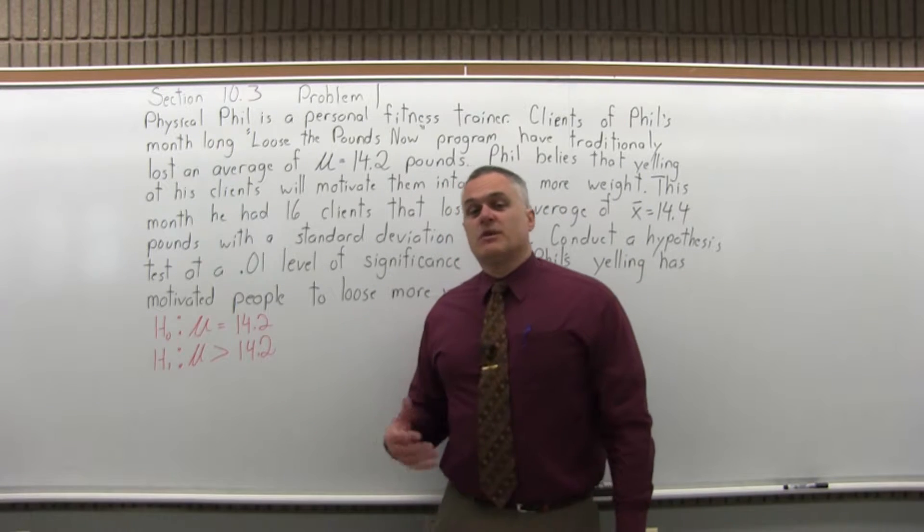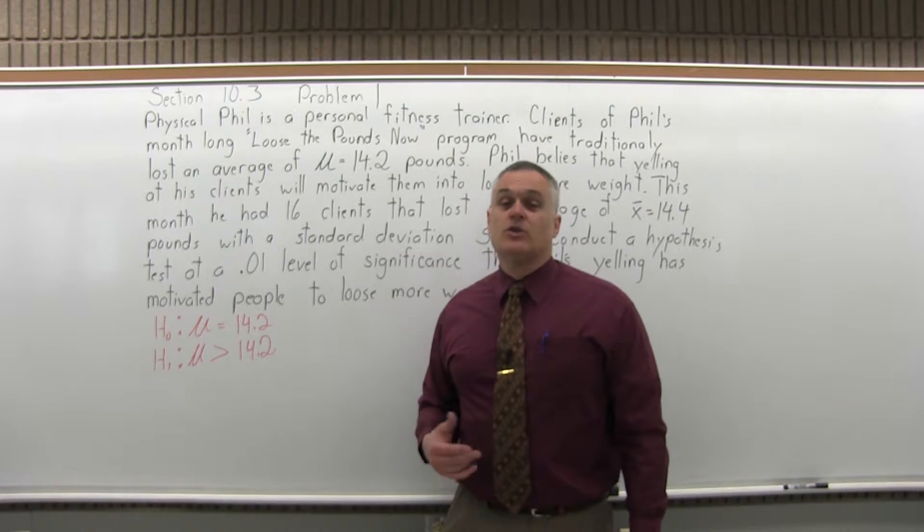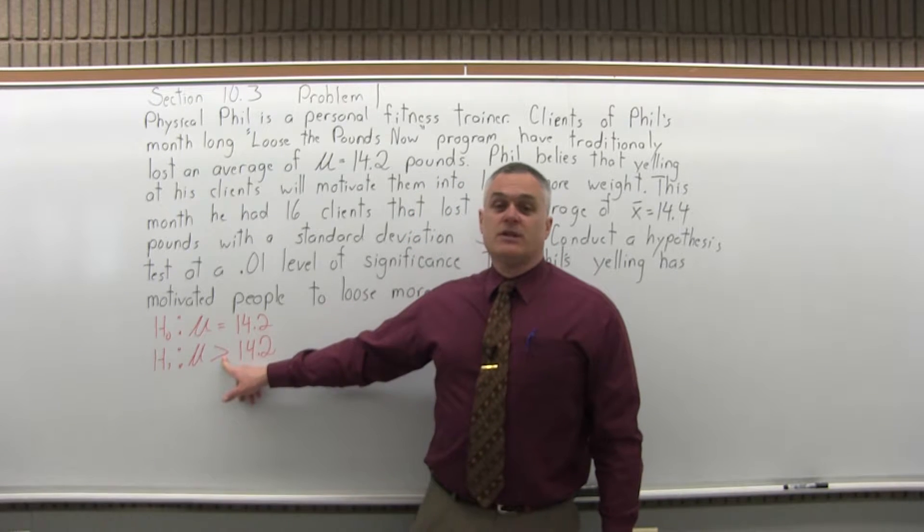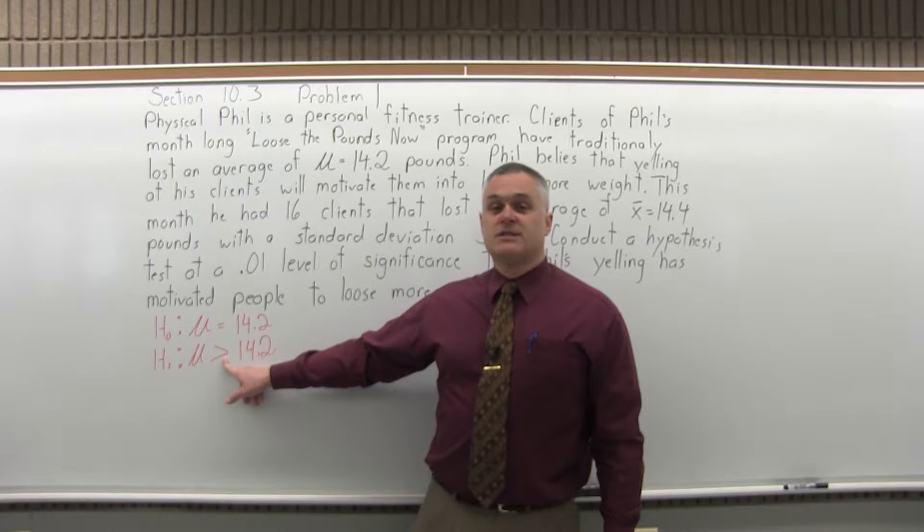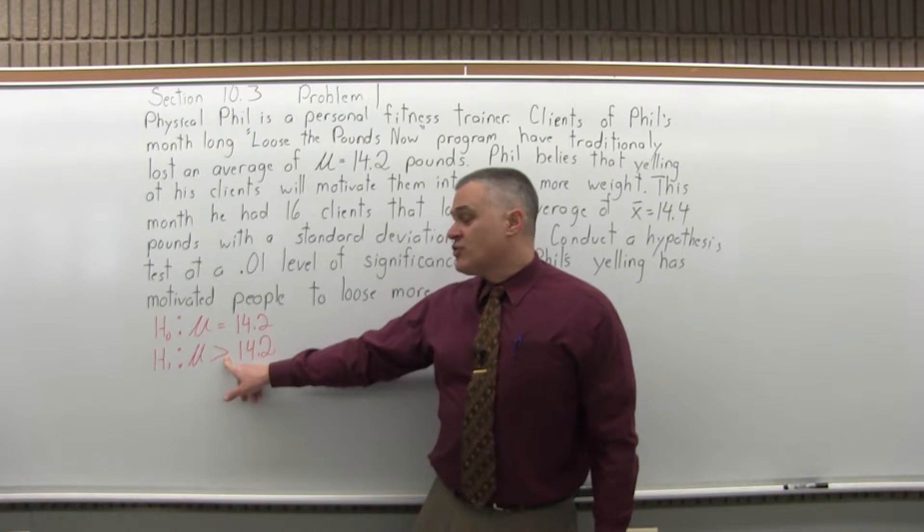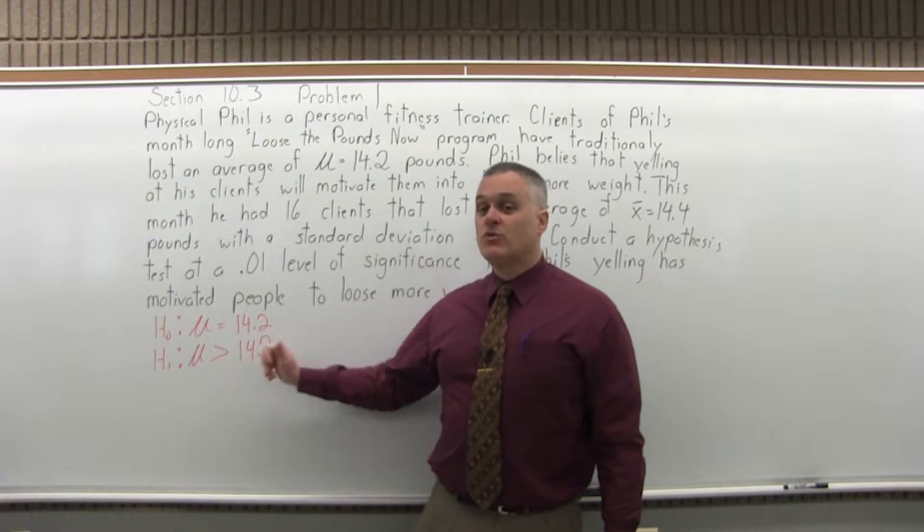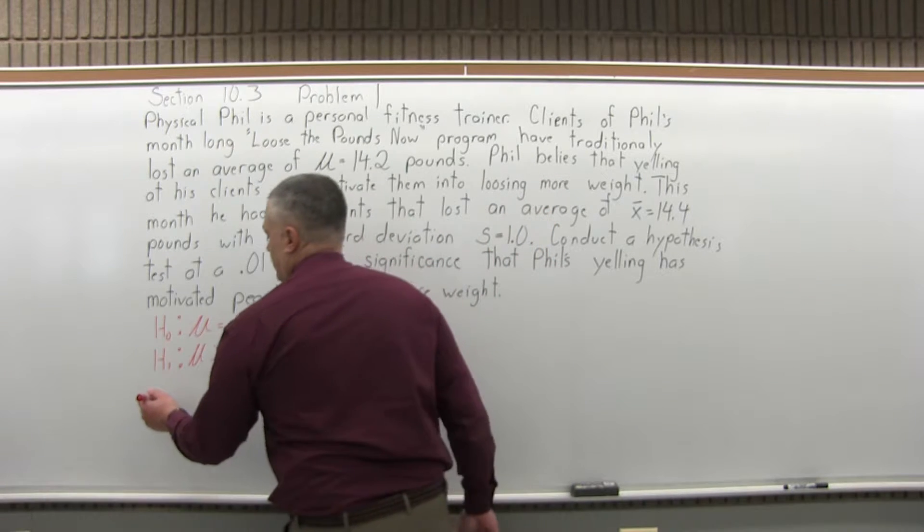Step three is determine if this is a right tail, left tail, or two-tail test. To determine that, look at the inequality symbol in the alternate hypothesis and see which direction it points in. So for this problem, we have a greater than symbol in our alternate hypothesis. Greater than points to the right, so this is a right-tail test.